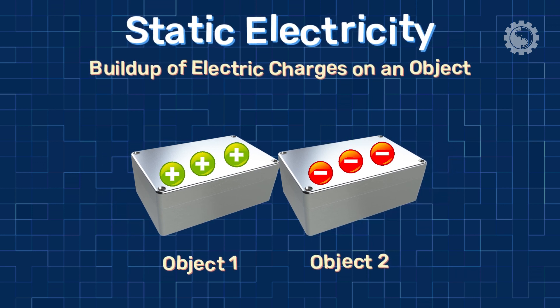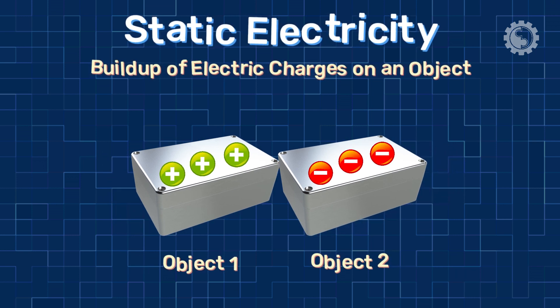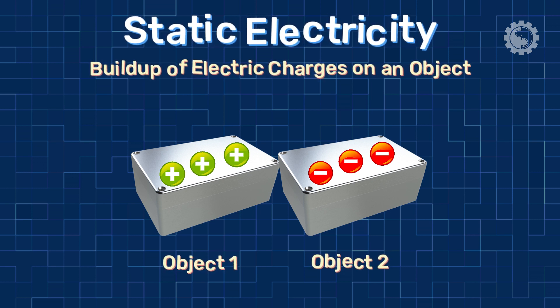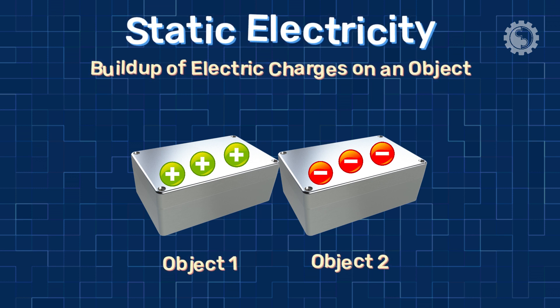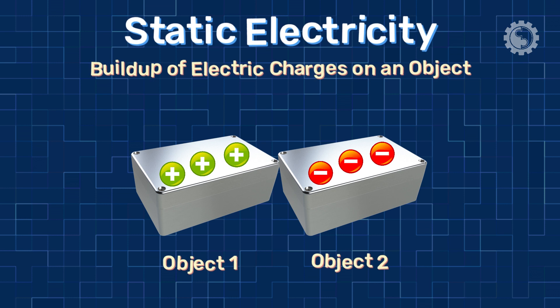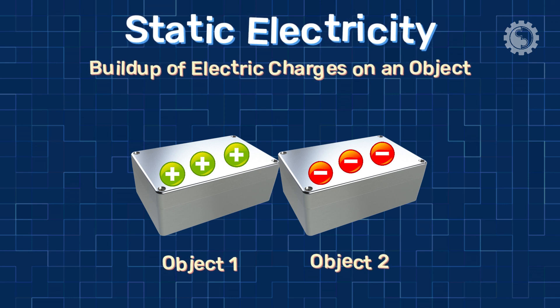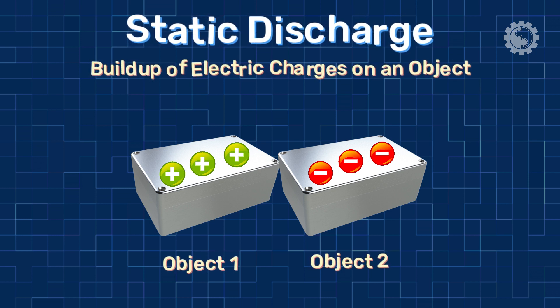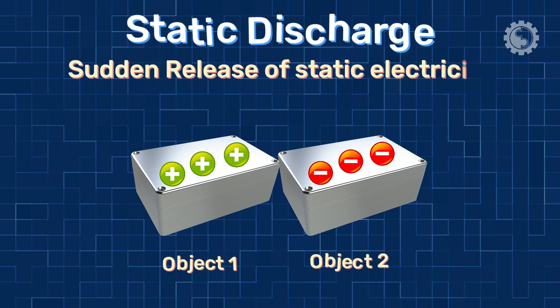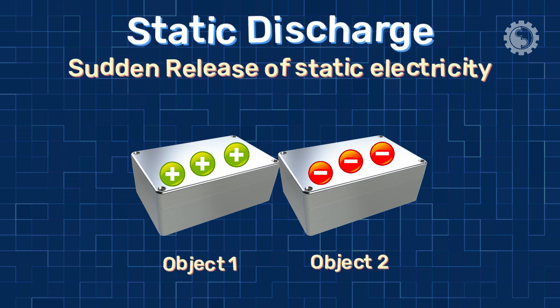If the buildup charge difference is very high, the electric charge in the object wants to balance them. So it discharges when the opposite charges come into contact. This phenomenon is called static discharge.